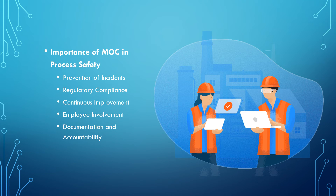The following are some of the importance of management of change in process safety: first, prevention of incidents; second, regulatory compliance; third, continuous improvement; fourth, employee involvement; and fifth, documentation and accountability. The management of change serves as a proactive measure to prevent incidents and accidents resulting from changes in processes. By systematically assessing risks and implementing controls, organizations can mitigate potential hazards.